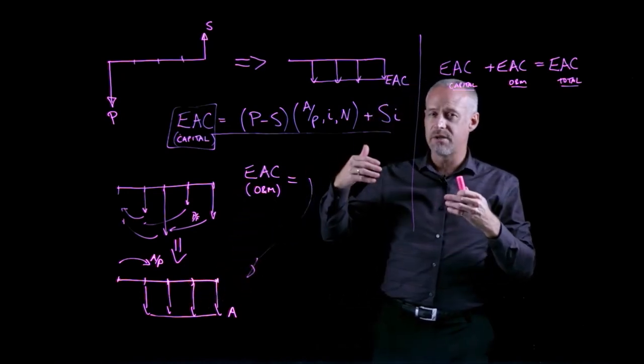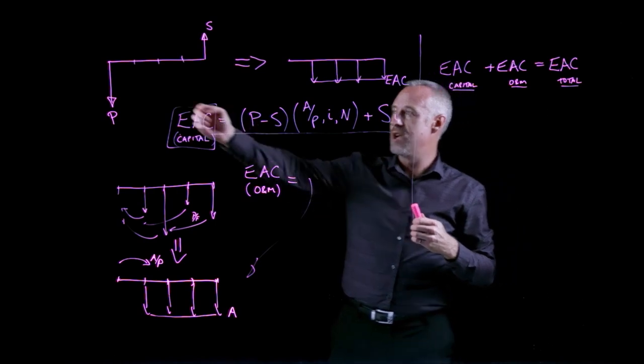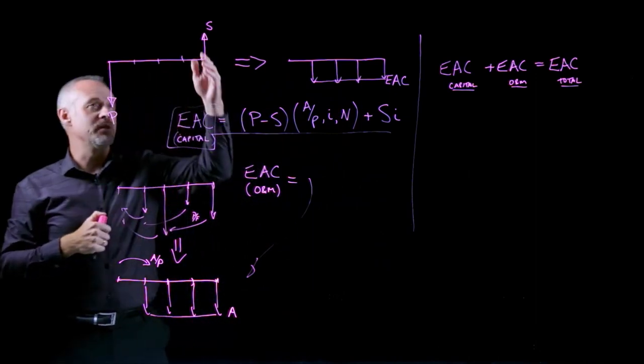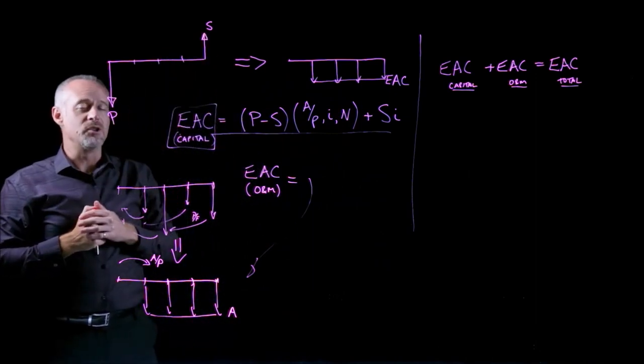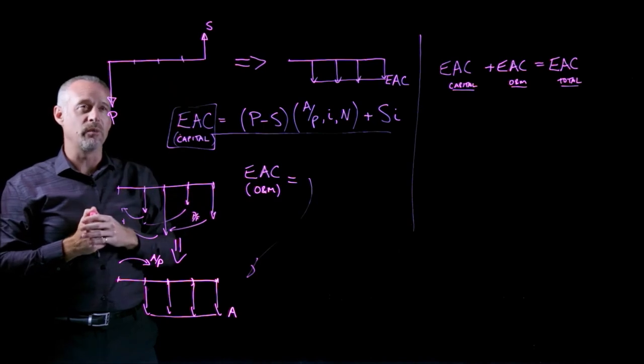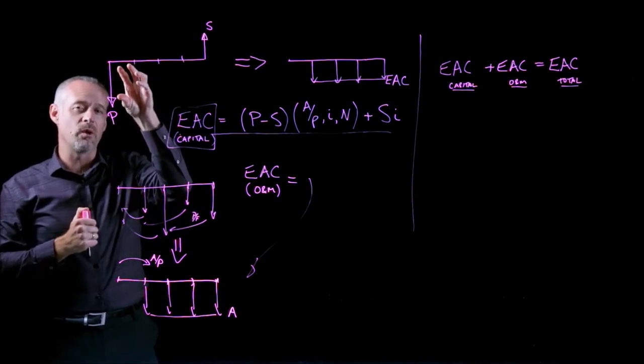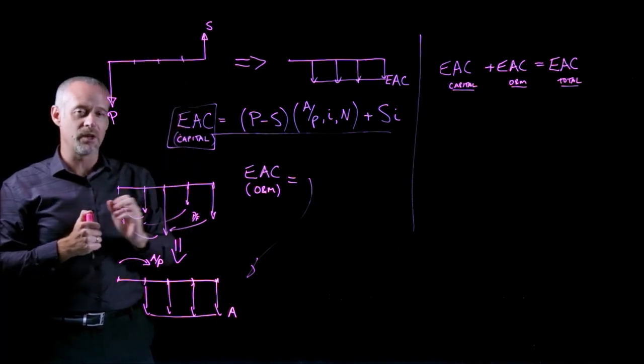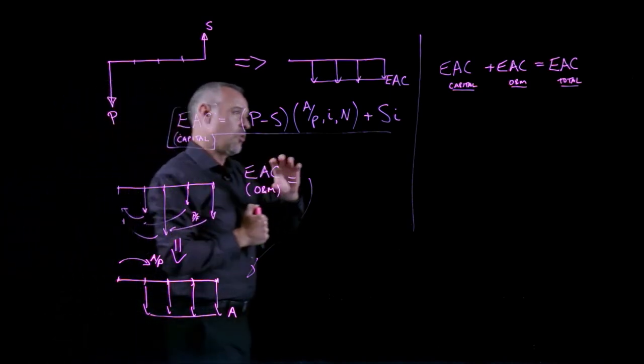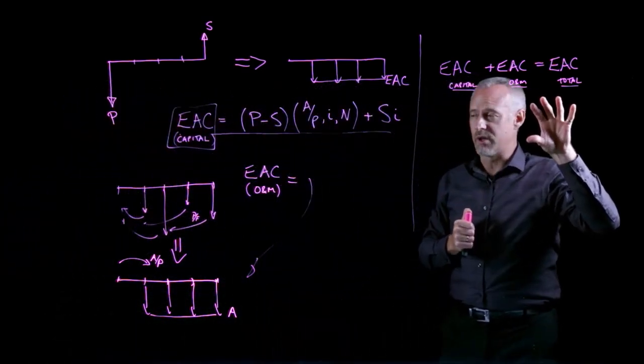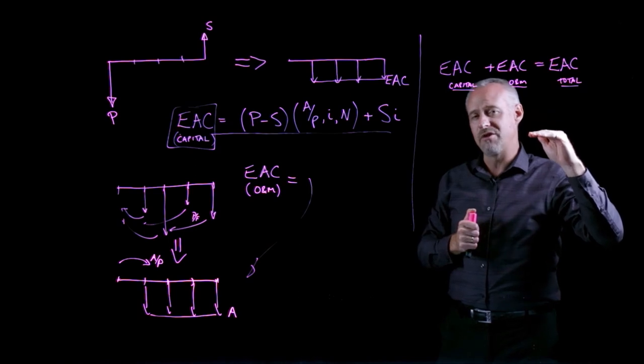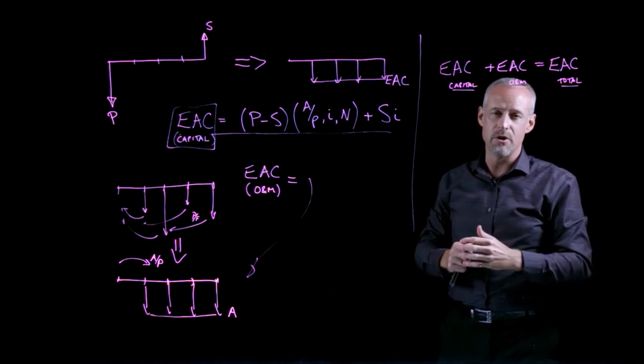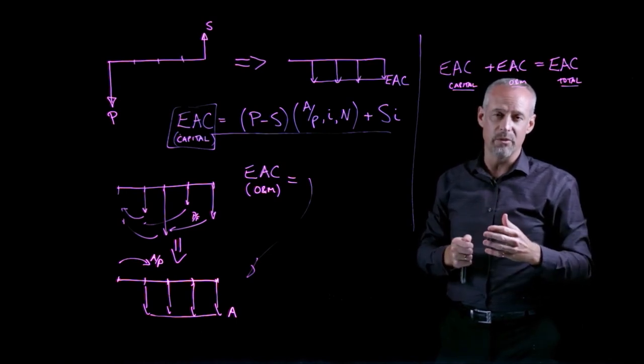Similarly, if we decide to evaluate a scenario where we only own a piece of equipment for one year, then sell it, we will typically approximate the salvage value using the depreciation of that equipment, so that we can evaluate a scenario of owning the equipment for one year, two years, three years, for both the capital component as well as the operating and maintenance component. And then, when we sum those two components, whatever number of years gives us the minimum total equivalent annual cost is the number of years we should own that equipment before we sell it.